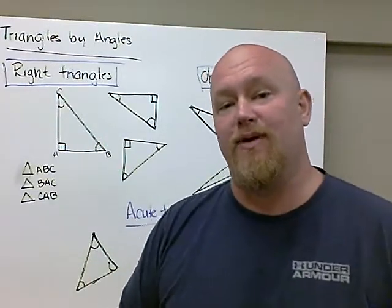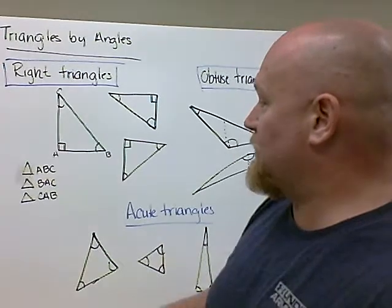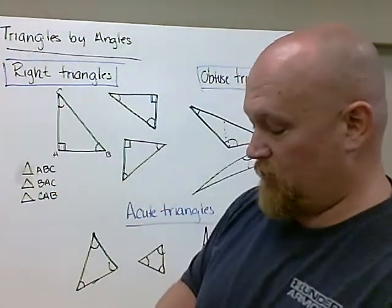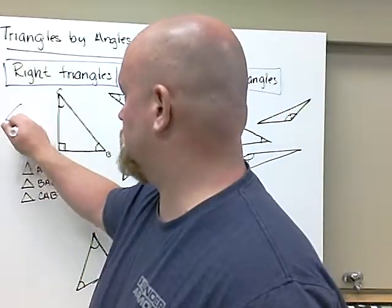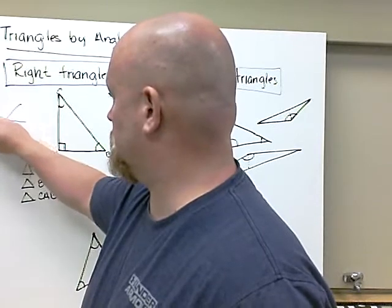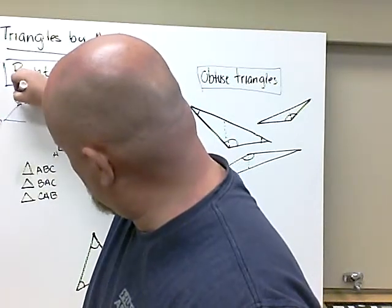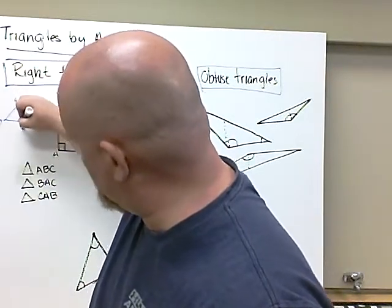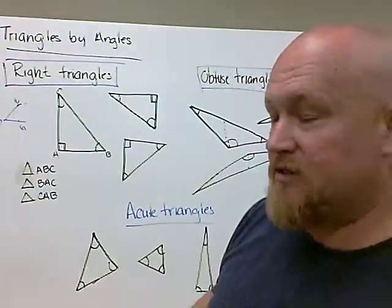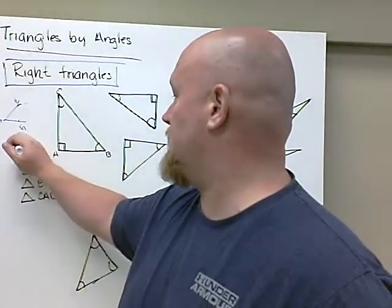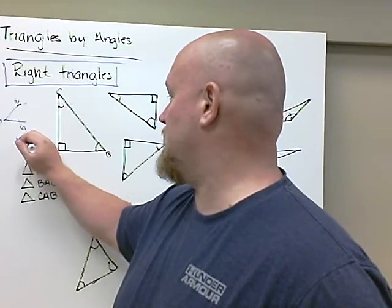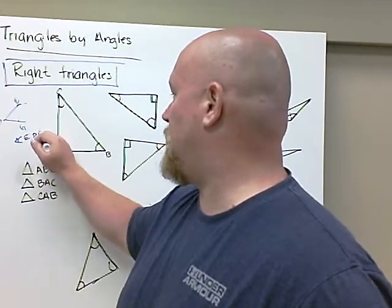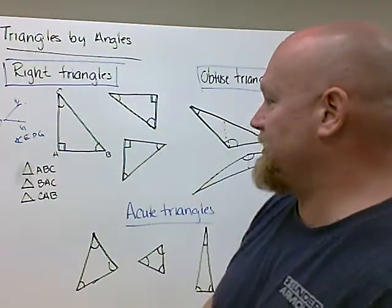If you'll remember when we talked about angles, we said that angles had to have that vertex of an angle as the center, angle E, D, G. But with triangles, that doesn't necessarily need to be the case.